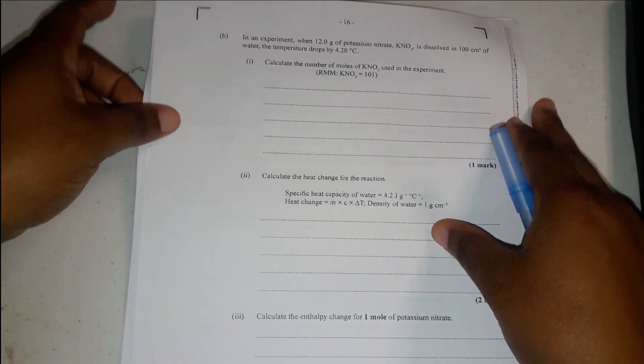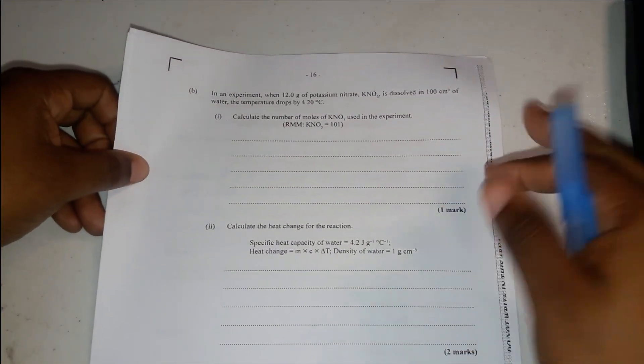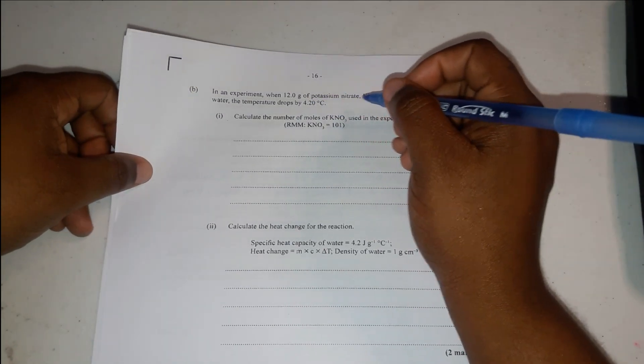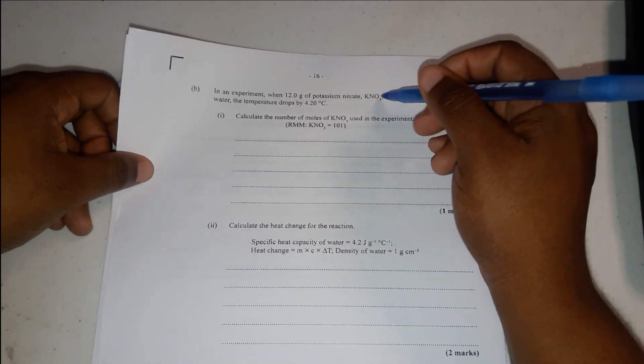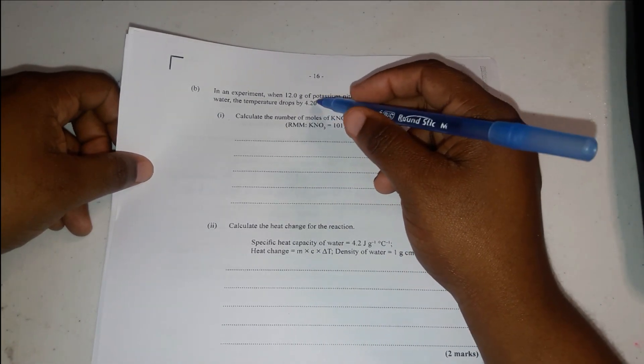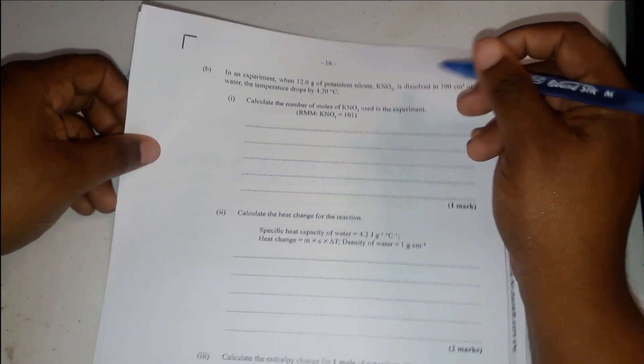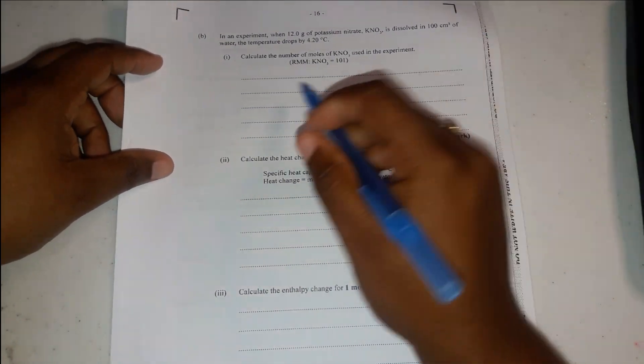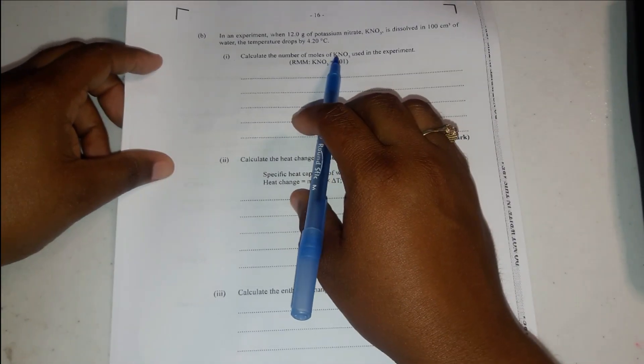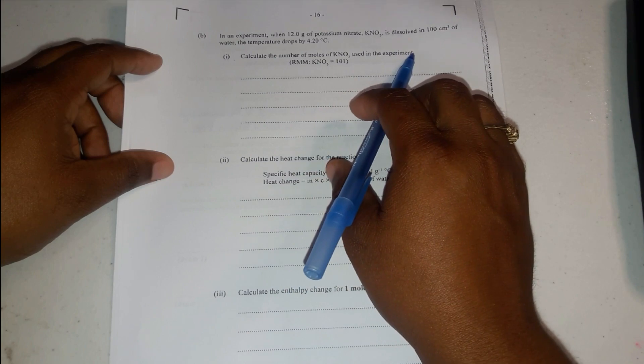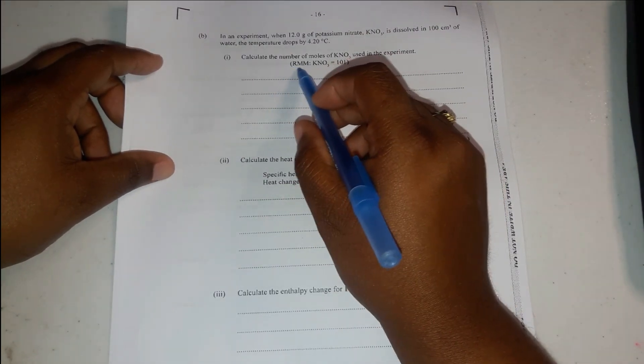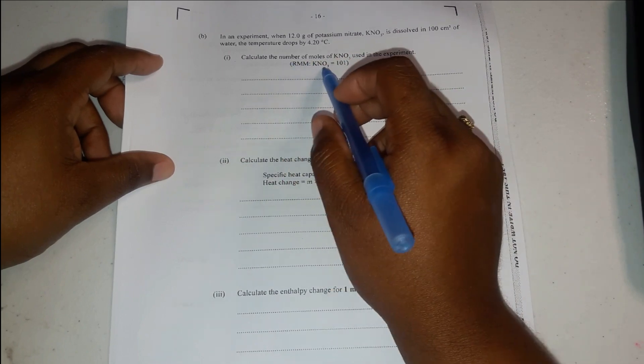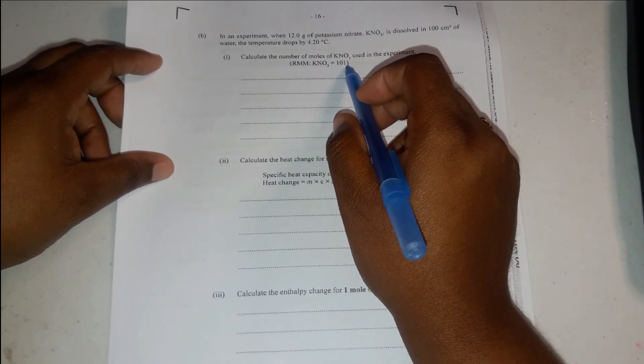In an experiment, when 12.0 grams of potassium nitrate is dissolved in 100 centimeters cubed of water, the temperature drops by 4.20 degrees Celsius. Calculate the number of moles of potassium nitrate used in the experiment. It now tells us that the relative molecular mass of KNO3 is 101 grams.